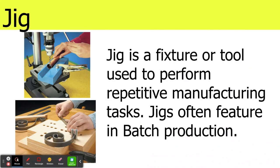Jig. A jig is a fixture or tool used to perform repetitive manufacturing tasks. Jigs often feature in batch production, and you can see at the top there's a jig especially for drilling pipe.